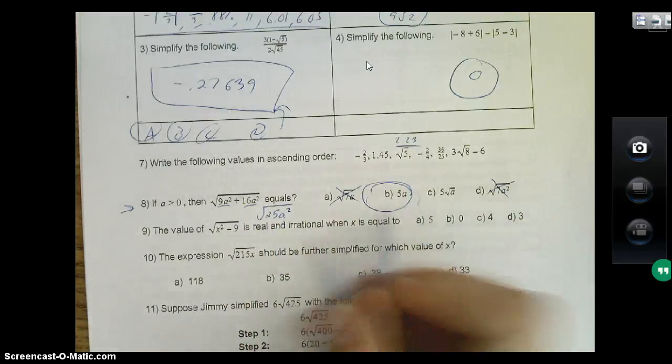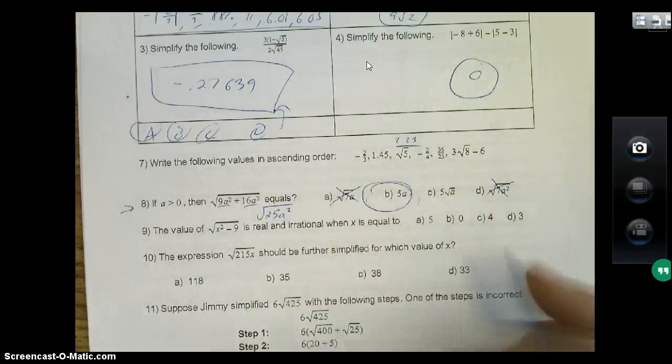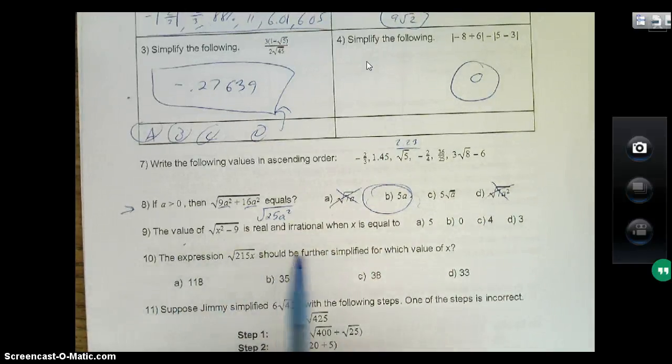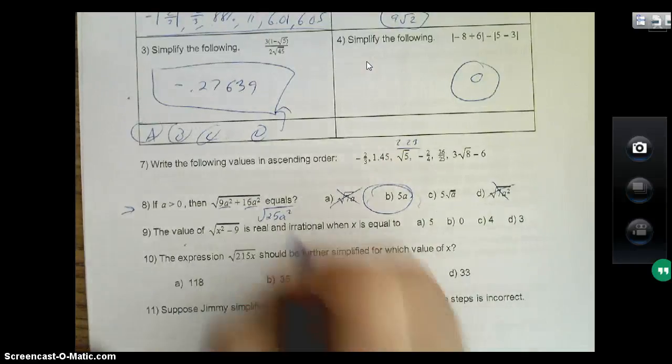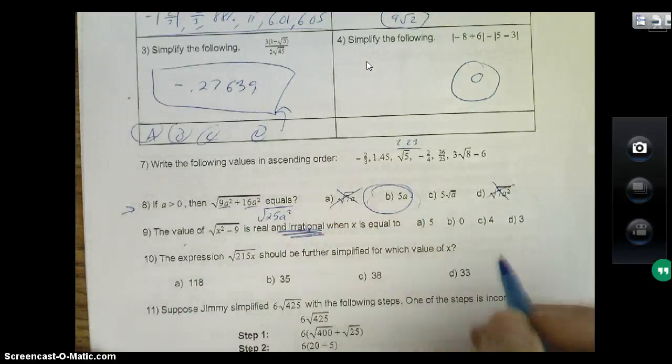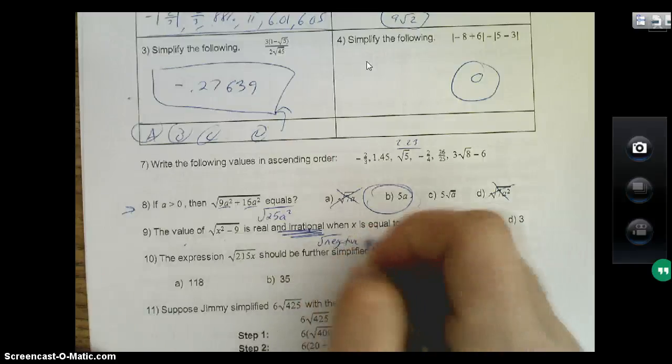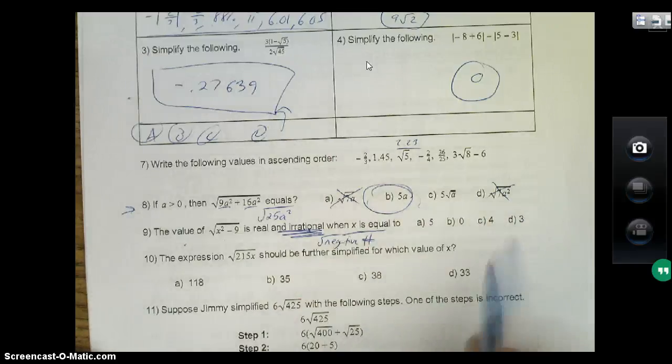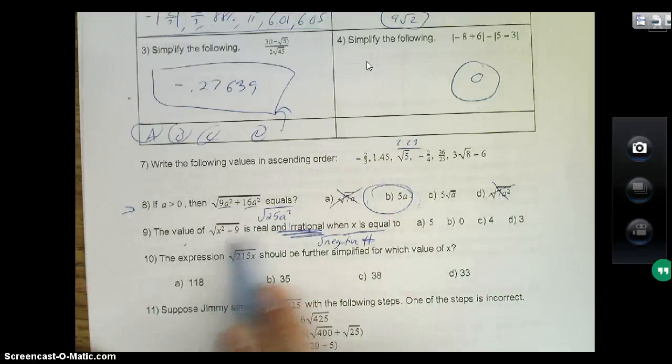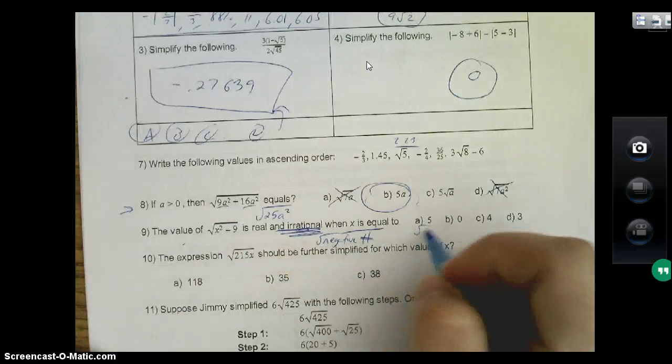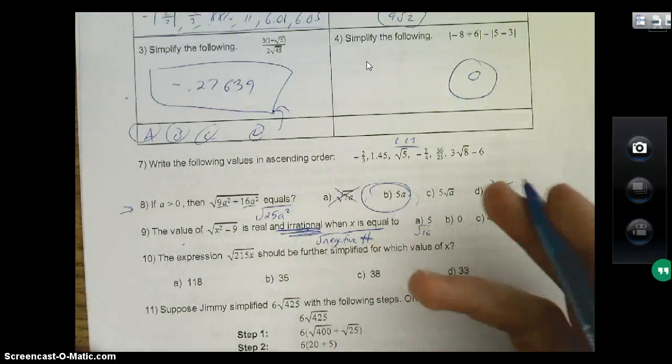The value of x² minus 9 under the radicand is real and irrational when x is equal to—all right, in order to be irrational you need to have a negative number under the square root. So what you're doing is taking your answers and seeing which one of them makes a negative under the square root. If I do 5, 5² is 25 minus 9 is 16, so the square root of 16 is 4, that's good, that's real, that's rational, it stops, cross it off. Zero: zero squared minus 9 is just negative 9.